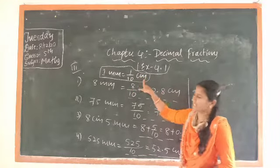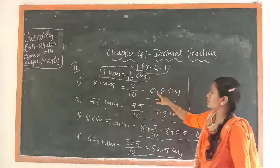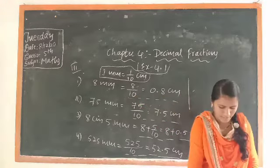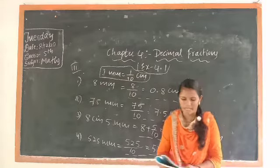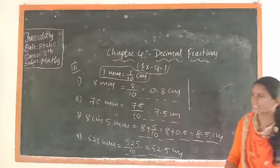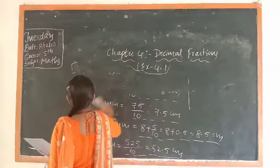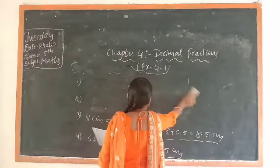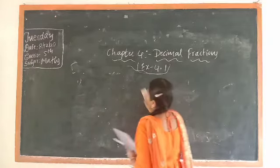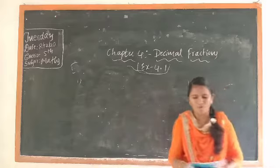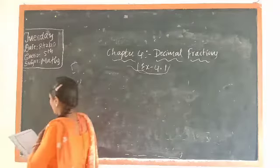Now, the fourth section: centimeter to meter. 1 centimeter is equal to 1/100 meter. Otherwise, 1 meter is equal to 100 centimeter. It's very important to know this formula.